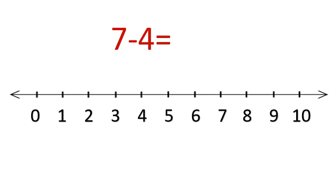Here we will start from number 7, jumping backward 4 times. 1, 2, 3, 4. It's number 3. So 7 minus 4, the answer is 3.